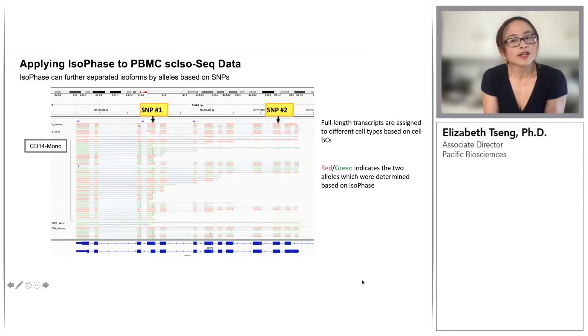Here is an example of applying IsoPhase to the PBMC-10X data I'd shown earlier. In this IGV screenshot, each alignment is an allele-specific isoform expressed in a certain cell type. Some cell types, such as the CD14 monocytes, had a much higher isoform diversity than the other cell types. Each allele-specific isoform is colored either red or green based on the two SNPs present in the transcribed region of this gene. While this is just a test case, we can begin to see how we may identify patterns of cell type-specific allele-specific isoform expressions.